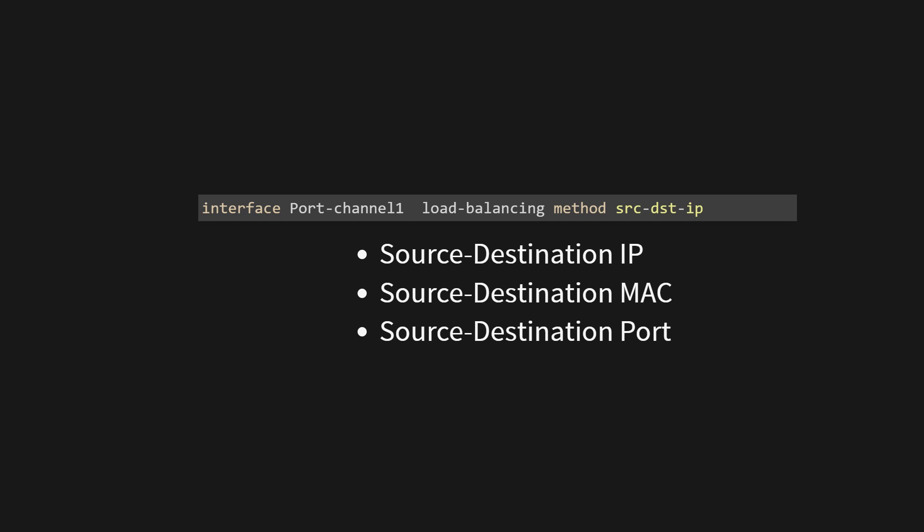In this configuration example, we are dealing with an interface called Port Channel 1. A port channel is a logical interface that represents a bundle of multiple physical interfaces, typically Ethernet links. The next part of the configuration, load balancing method SRCDSTIP, refers to the load balancing method being applied to the traffic that flows through the port channel interface.